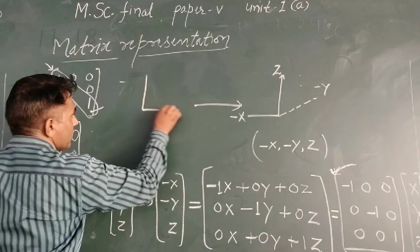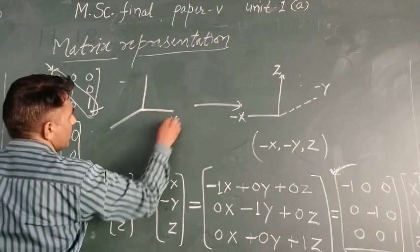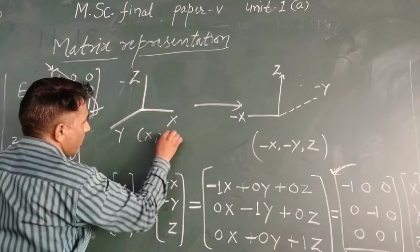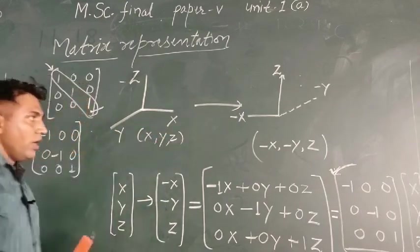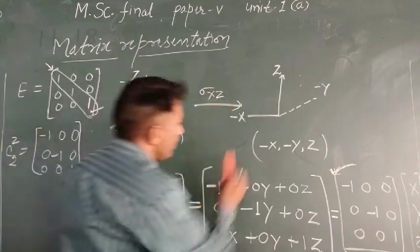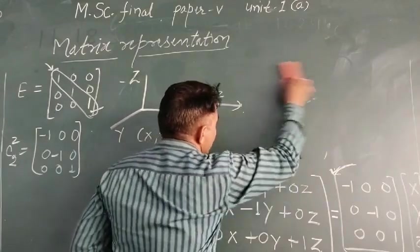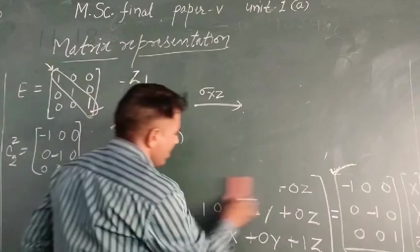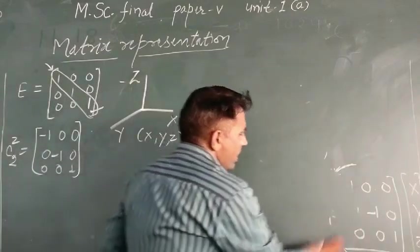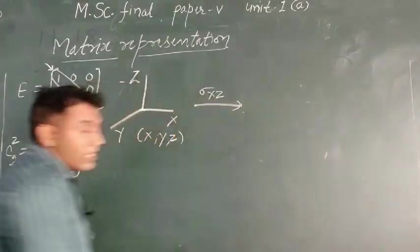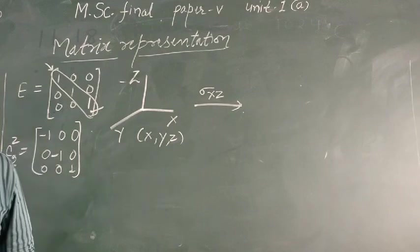Let me draw the axes here: z-axis, x-axis, y-axis. Now we take σ(xz) — the symmetry operation σ(xz). What will be the matrix representation for this symmetry operation? When we perform this transformation on the coordinates and see what change occurs according to this operation, what will be the matrix representation?